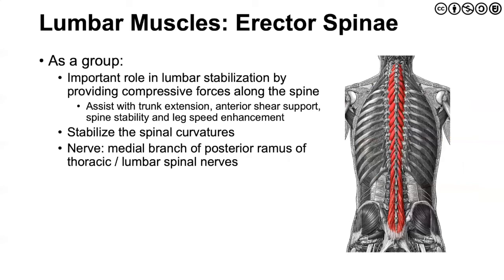Next, the erector spinae — these are found not only in the lumbar spine, but also at each level: thoracic and cervical. They play an important role in lumbar stabilization, helping with extension of the trunk, anterior shear support, and spine stability. Oftentimes they are important for maintaining what we might refer to as spinal neutral, or that slight lordotic curvature we see in the lumbar spine. The nerve innervation is the medial branch of the posterior ramus of the thoracic and lumbar spinal nerves.